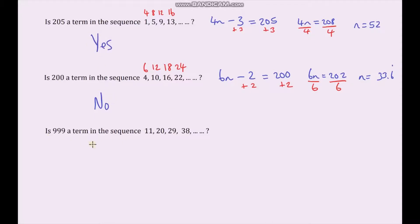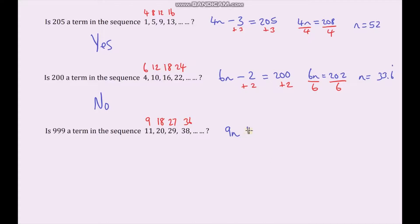For the last one, pause the video and see if you can work out whether 999 is a term in this sequence. Let's work out the nth term. The difference between terms is 9, so it's 9n. Doing my 9 times table, the adjustment is add 2, giving 9n plus 2. I'll set that equal to 999.